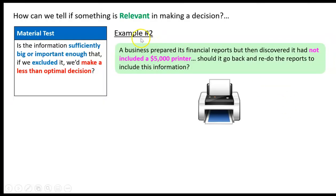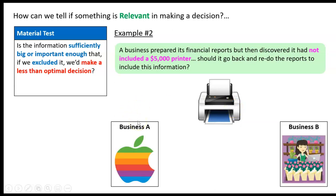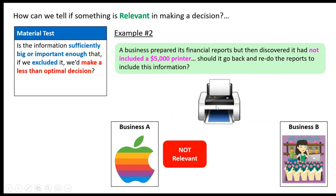Let's change the example. Same scenario, but instead of a $10 stapler, we've got a $5,000 printer that we forgot to put in our reports. Should we go back and redo them? Business A is Apple — we're going to say that's not relevant. Should it have been included? Absolutely. But is it a big deal? Are we going to make a worse decision about the future of Apple because this printer's not in there? No. That's not material enough to affect decision-making.